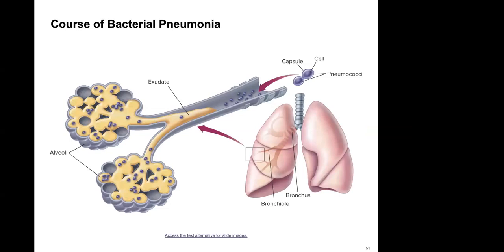With pneumonia, fluid builds up within the alveoli of the lungs. This takes those particular alveoli out of commission for gas exchange, and overall oxygenation can fall because there is less surface area available to accomplish gas exchange.